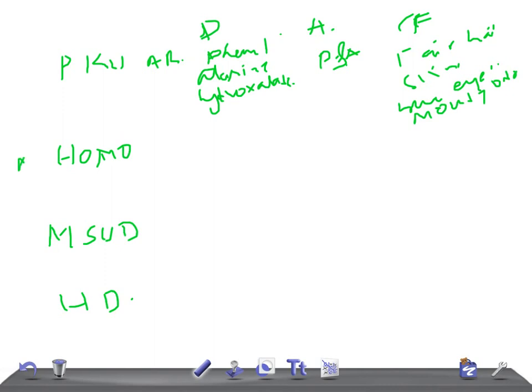Homocystinuria is also autosomal recessive — remember, most metabolic disorders are autosomal recessive. The enzyme deficient here is cystathionine synthase. The accumulation is homocystine and methionine — remember H and M.